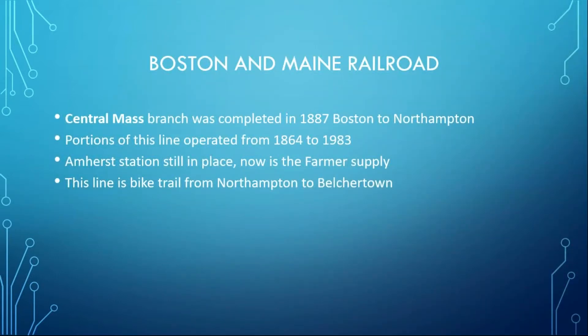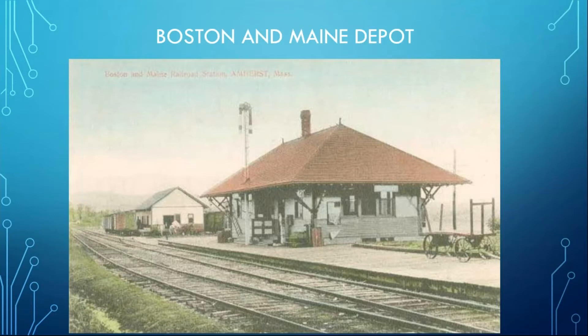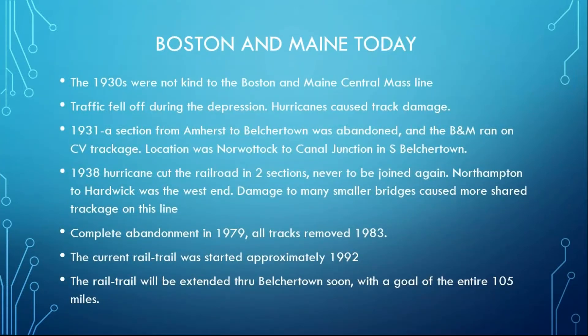Starting with the Boston and Maine alphabetically — the Central Mass branch was completed about 1887 from Boston to Northampton. Portions of the line were operating anywhere from 1864 all the way to the end of the line in 1983. The Amherst station is still in place — it's now a farmer supply, just east of Route 116. Most of that line in Amherst is now the bike trail from Northampton to Belchertown. There's a picture of the station — you can hardly recognize it now, other than the roofline. They've added all the sides to it.